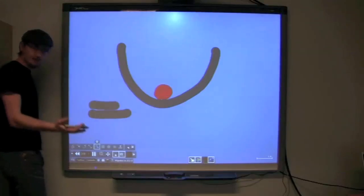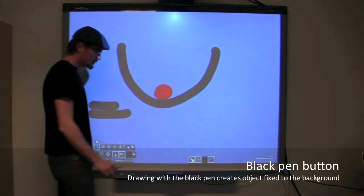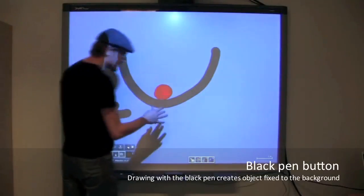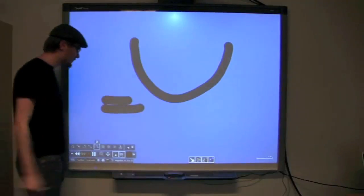Uncheck that, draw something in black, it falls like everything else. So it's just a shortcut to getting something fixed. Now let's remove that, just throwing away with the finger.